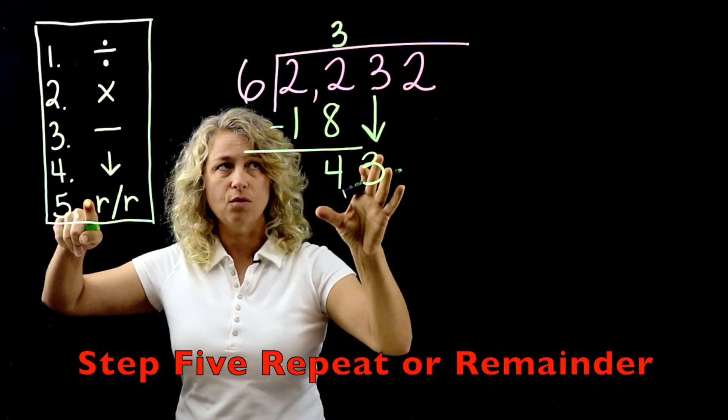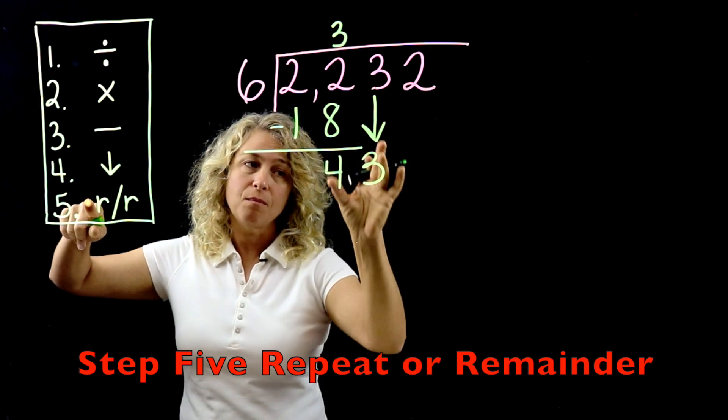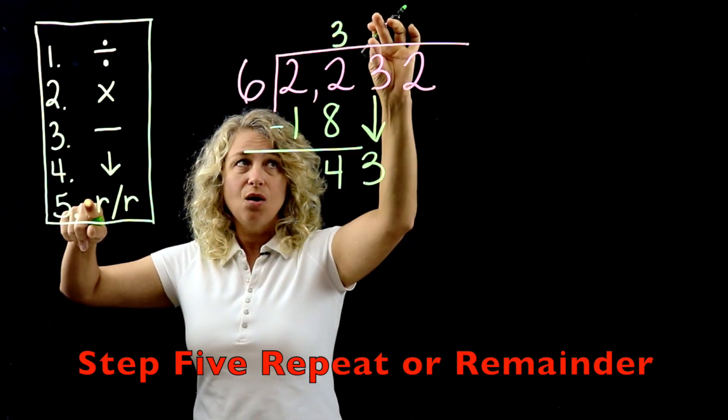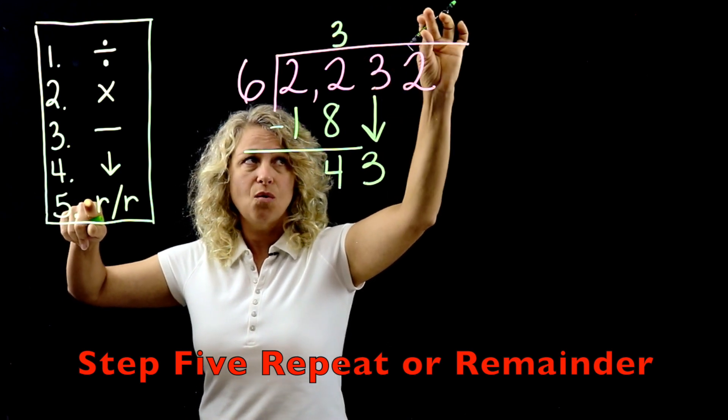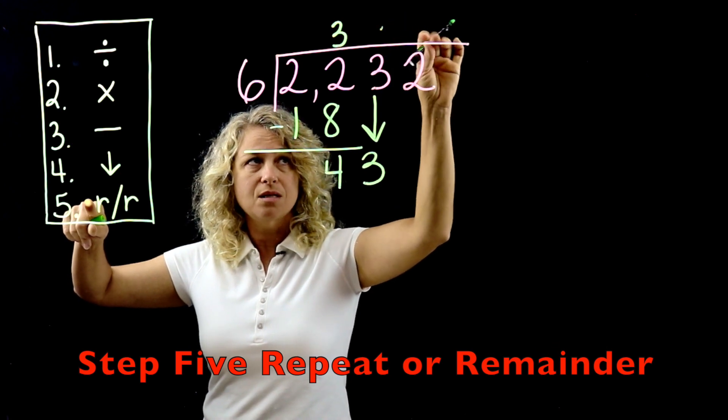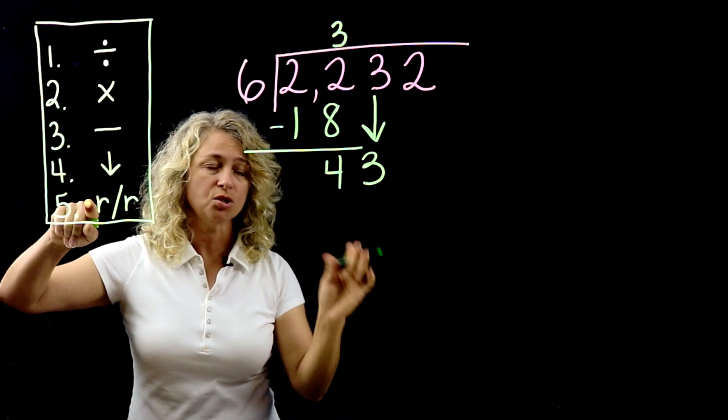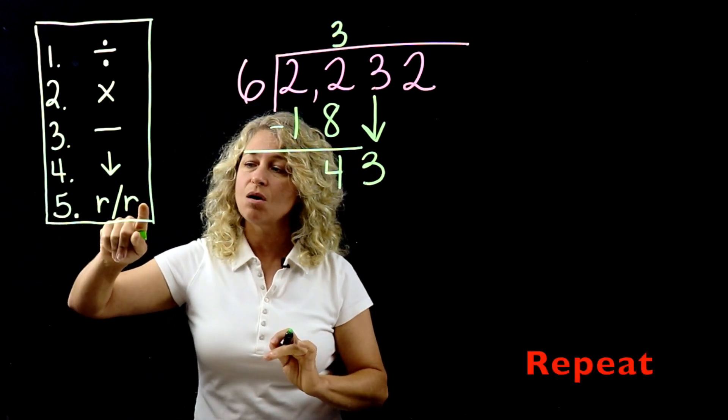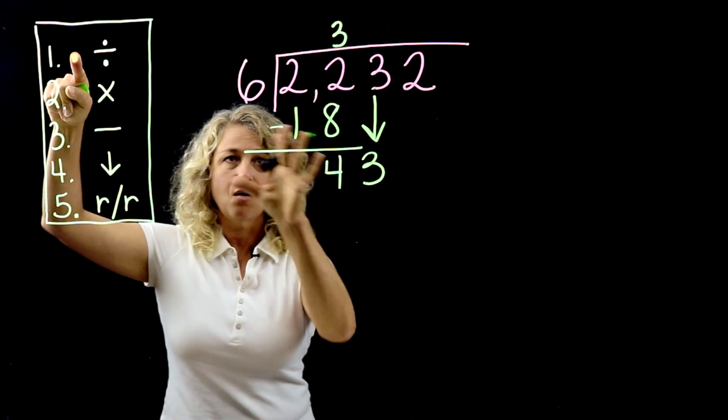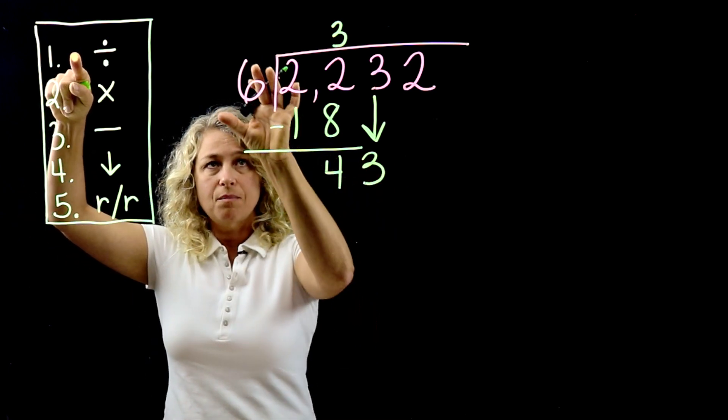So at this point we're at step 5, and you're determining is this our remainder? Is this the answer 3 with the remainder of 43? No, you would never have a remainder larger than the divisor. And we know it's not the remainder because there's no answer above these two numbers. So you have to have a number above these three numbers here to finish it out. So we're going to repeat. This R will be repeat all the way back to the beginning step.